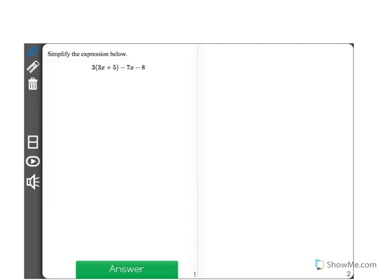Simplify the expression below, 3 times 3x plus 5 minus 7x minus 8. I'm going to write this out a little bit bigger.